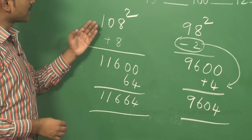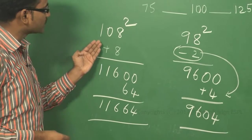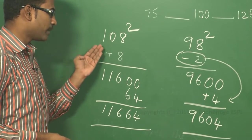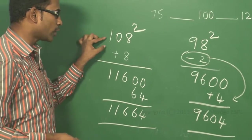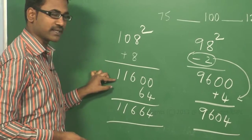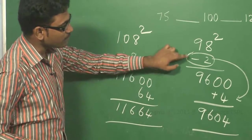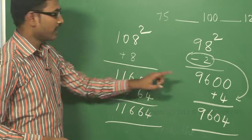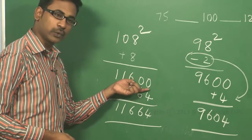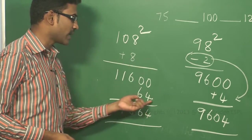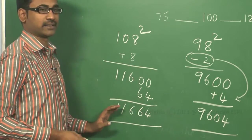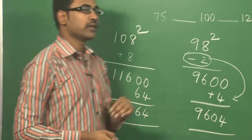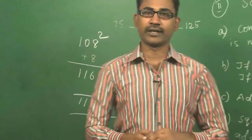These are the steps: first, consider how much the number is more or less than 100. Then, based on that, add or subtract accordingly — 108 plus 8 gives 116; for 98 minus 2 gives 96. Third step: add two zeros. Final step: square the difference and add at the end. This is the procedure to calculate square numbers close to 100.